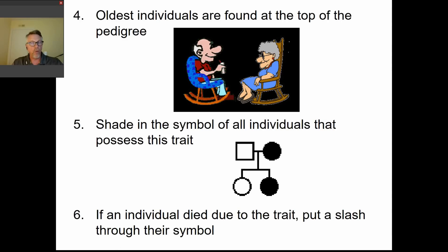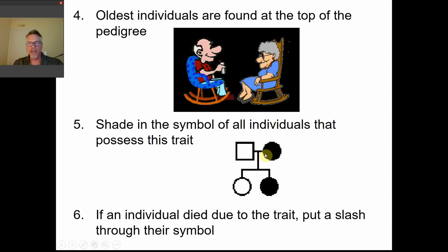In general with a pedigree, the oldest organisms are found at the top and they get younger as you move down. The shading is probably the most telling part of the pedigree. We shade the symbol of an individual that possesses or suffers from whatever trait we're tracking. A shaded symbol means she has the trait; an unshaded symbol means he doesn't. In their children, one daughter has the trait and the other does not.